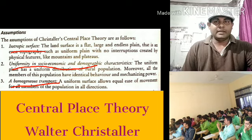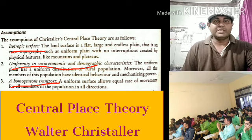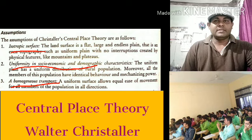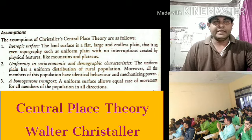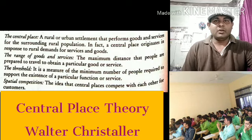The second assumption is uniformity in socioeconomic and demographic characteristics. The uniform plain has a uniform distribution of the rural population, and all members of this population have identical behavior and purchasing power. The third assumption is a homogeneous transport system — a uniform surface allows equal ease of movement for all members of the population in all directions.